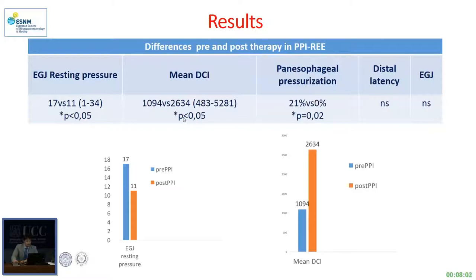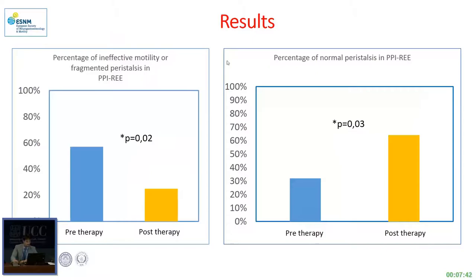Moreover, we found a reduction in EGJ resting pressure and an increase in mean DCI, and these differences were statistically significant. There was also a reduction and normalization in panesophageal peristalsis after therapy. The two graphs showed a reduction in the percentage of ineffective motility or fragmented peristalsis, and an increase in the percentage of normal peristalsis in PPI-REE after therapy, and these differences were statistically significant.